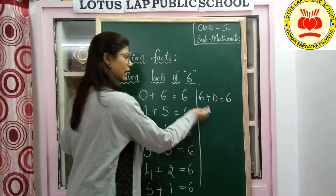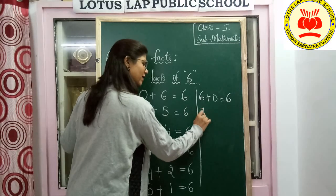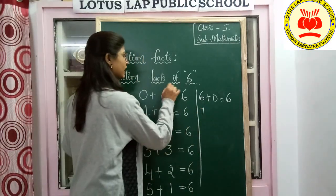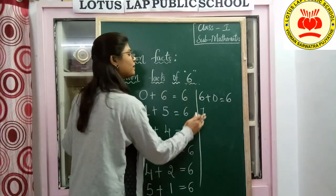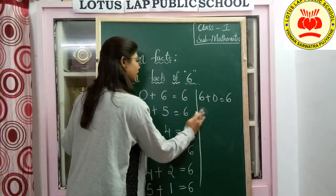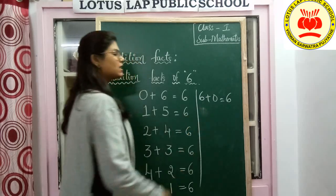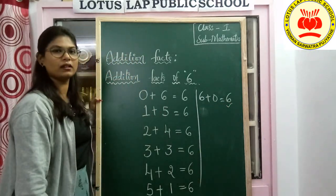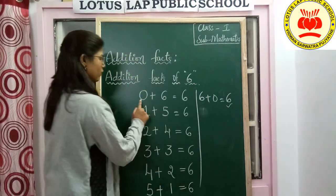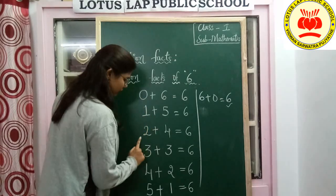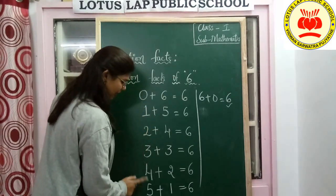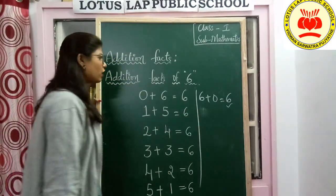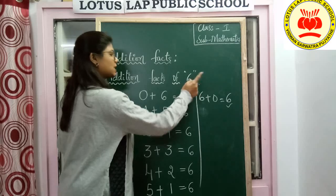Can we do with 7? No — because we are finding addition facts of 6, we cannot take 7. Here it ends, children. 1, 2, 3, 4, 5, 6, 7 addition facts — we got 7 addition facts for 6.